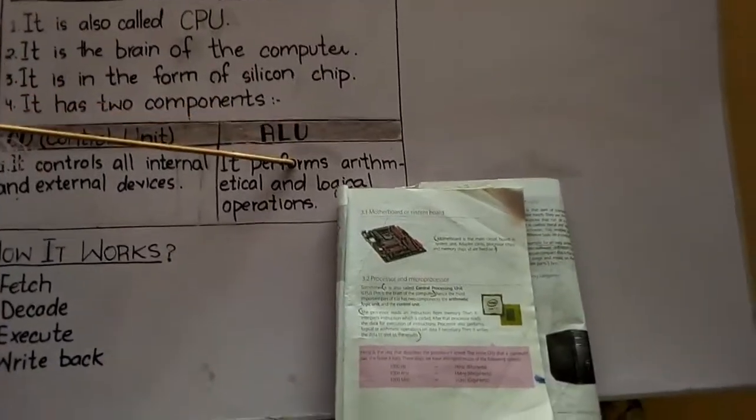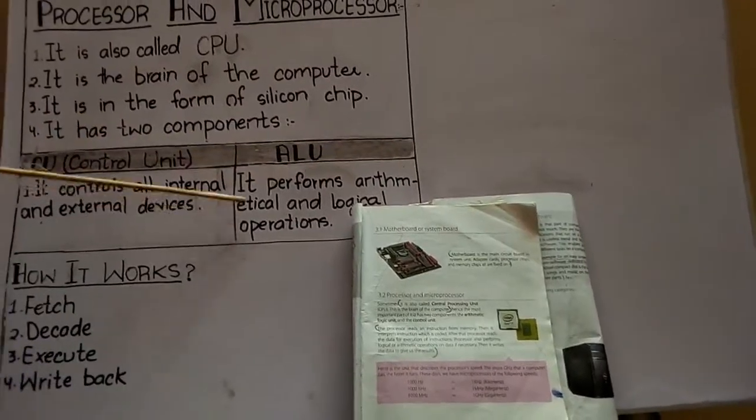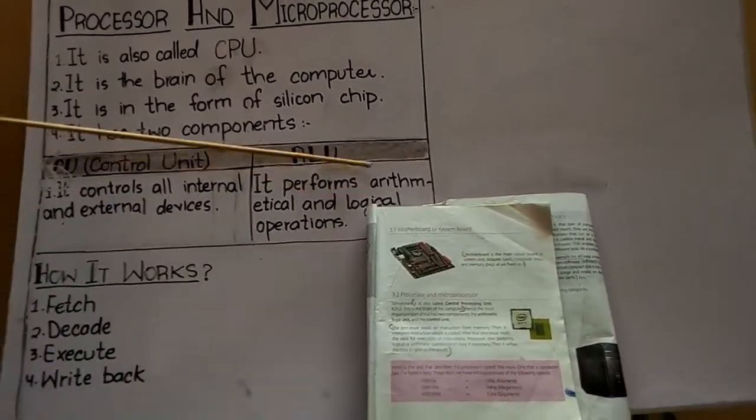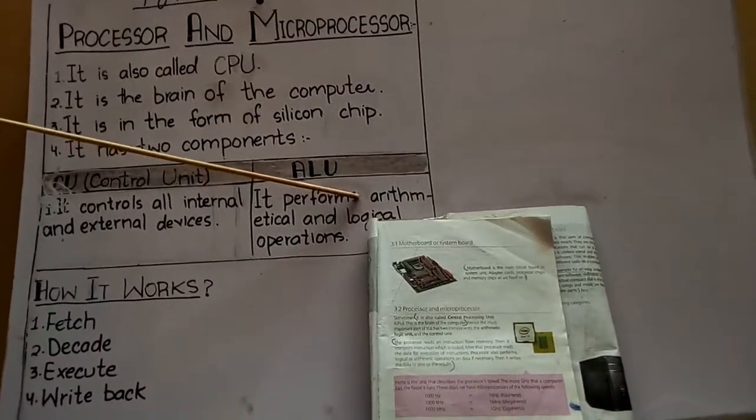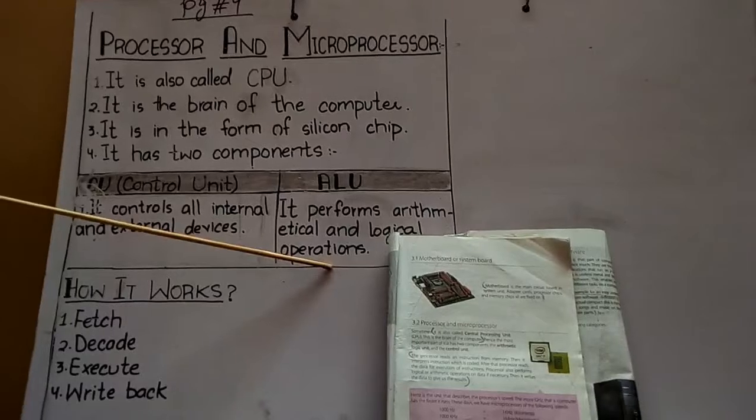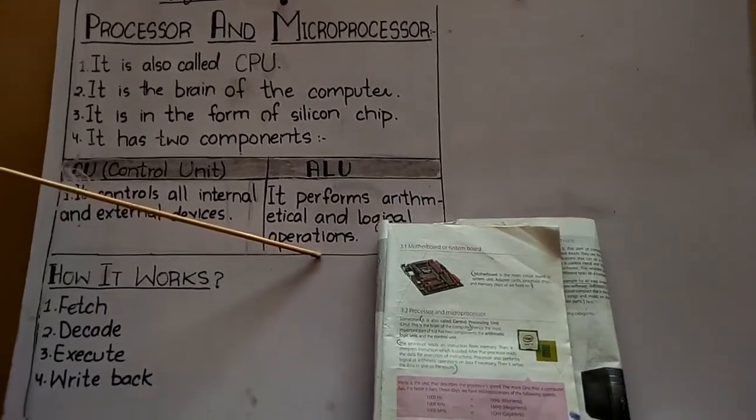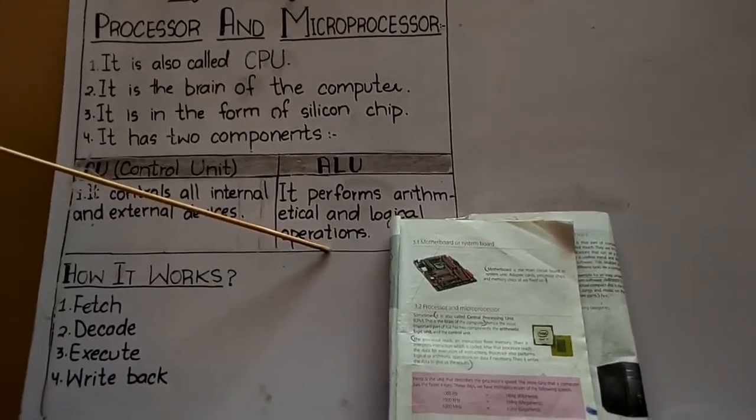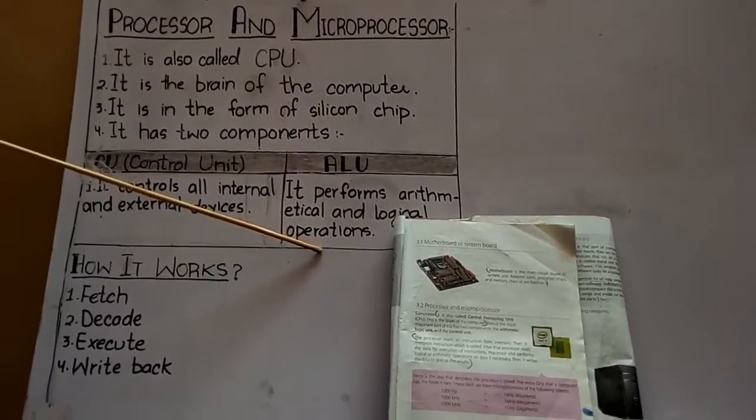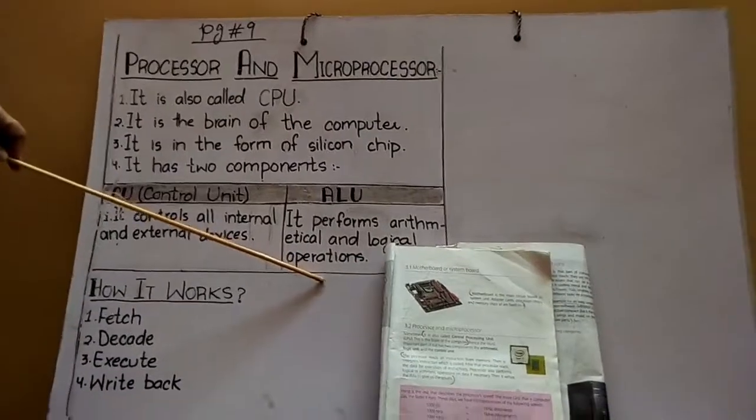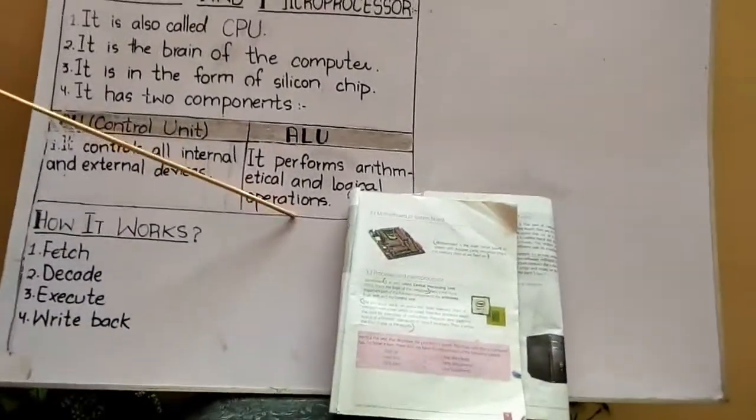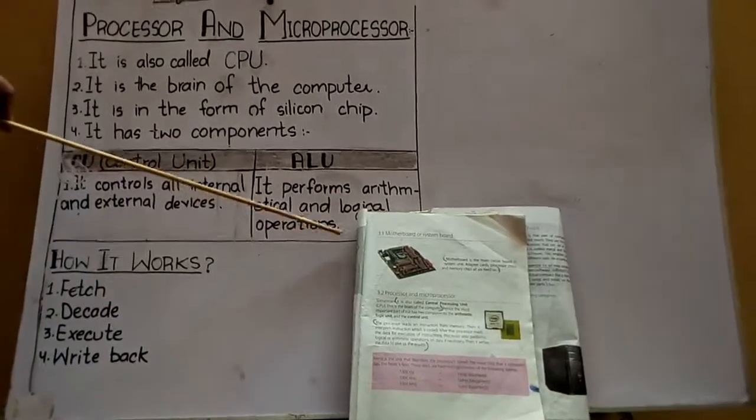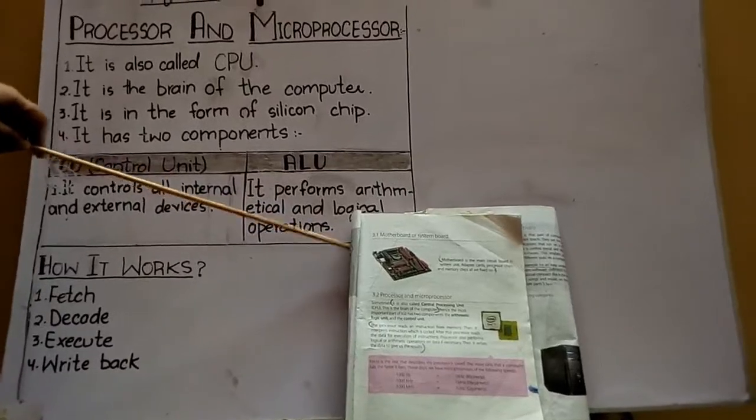It also manages commands and instructions. All the computer's work is controlled by the Control Unit. What is ALU? It performs arithmetic operations, meaning mathematical operations: addition, subtraction, multiplication and division. And it also performs logical operations, meaning comparisons. When the computer compares two numbers, that's logical operations. The computer decides which number is greater than, less than, equal to, or not equal to.